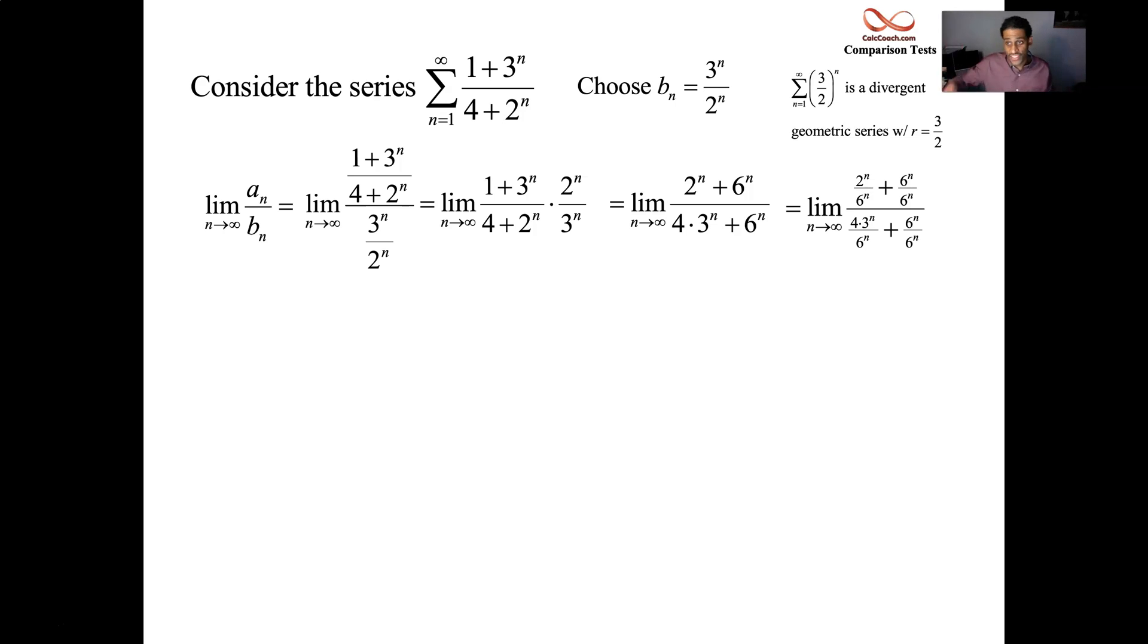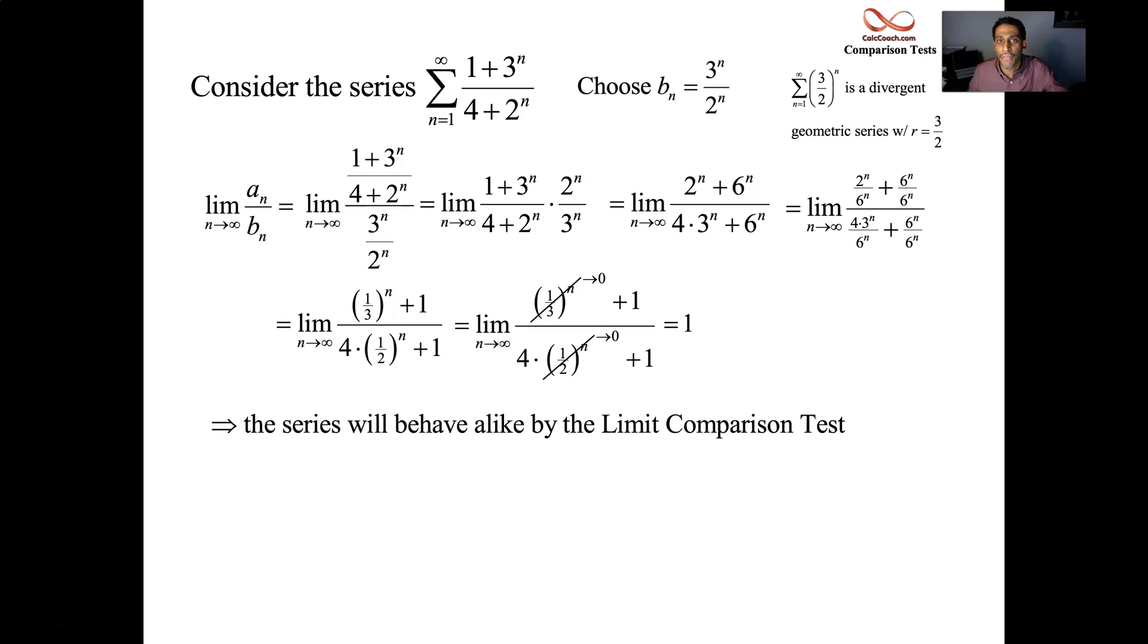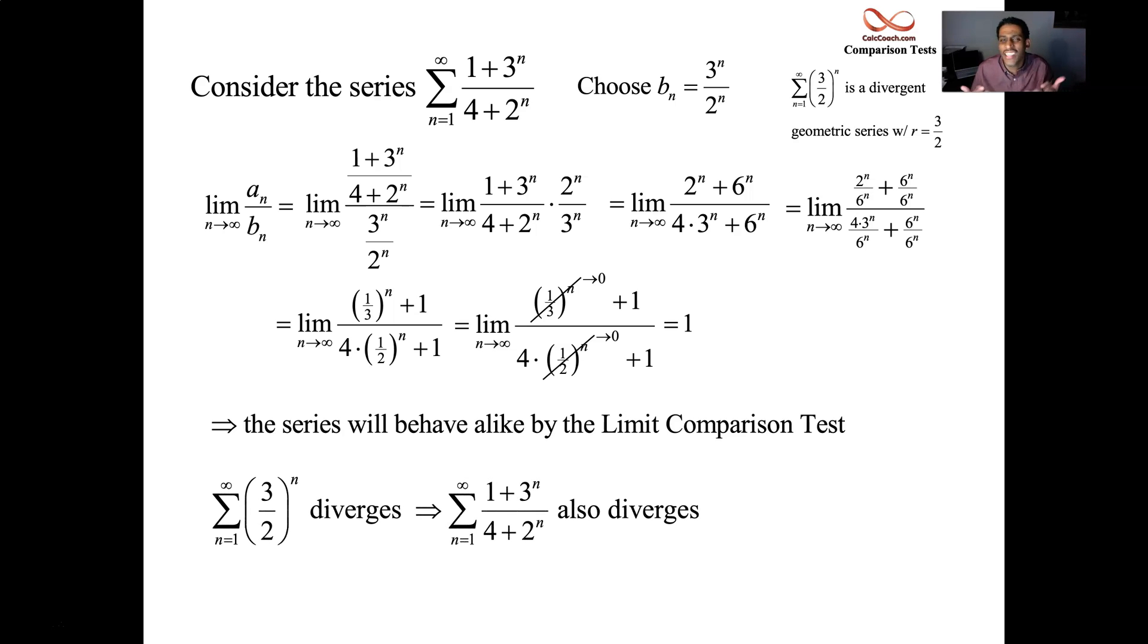And so we end up with 1s on the second parts of the numerator and the denominator. And in the first part of the numerator, we get 1 third to the n. The first part of the denominator, we get 1 half to the n times a 4. Since these ratios are less than 1, they end up going to 0. And we have a limit of 1. That's okay. It doesn't matter the size of the constant, it just means that there is a constant. Therefore, they behave alike. You went out and got a divergent geometric series. So your series, which is just plus 1, plus 4, it's going to also diverge.